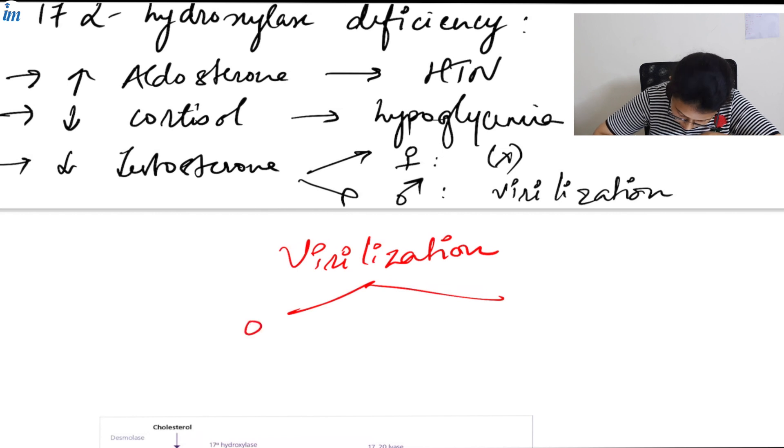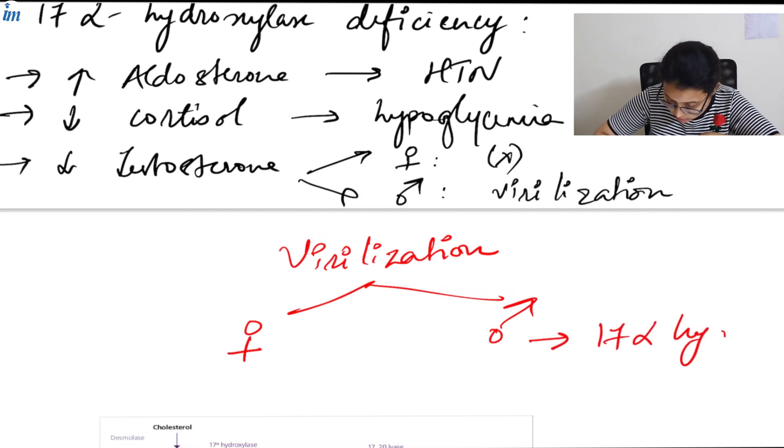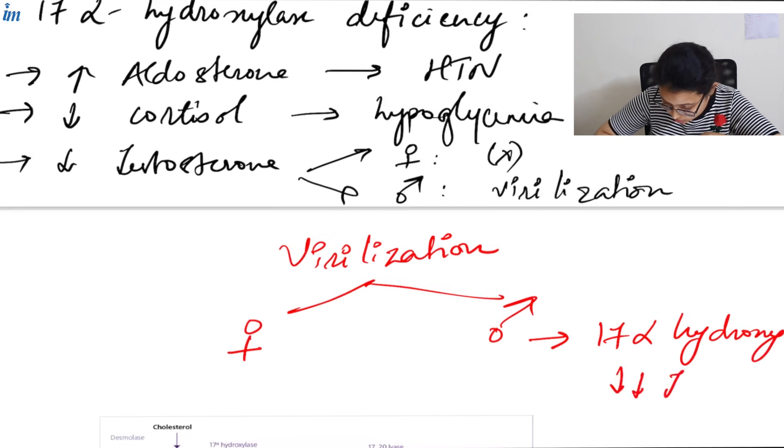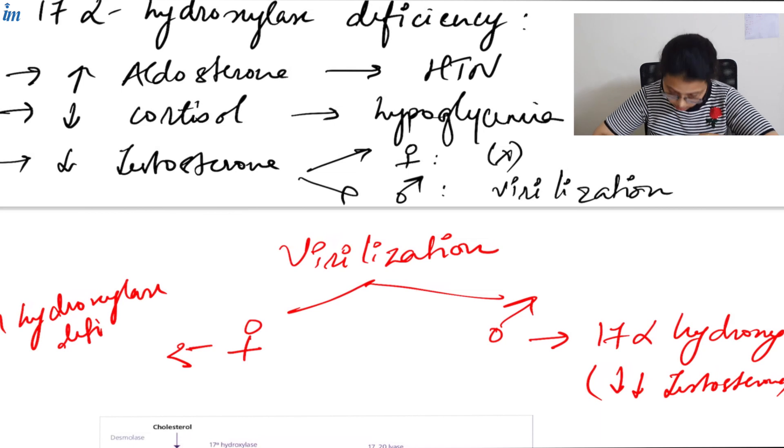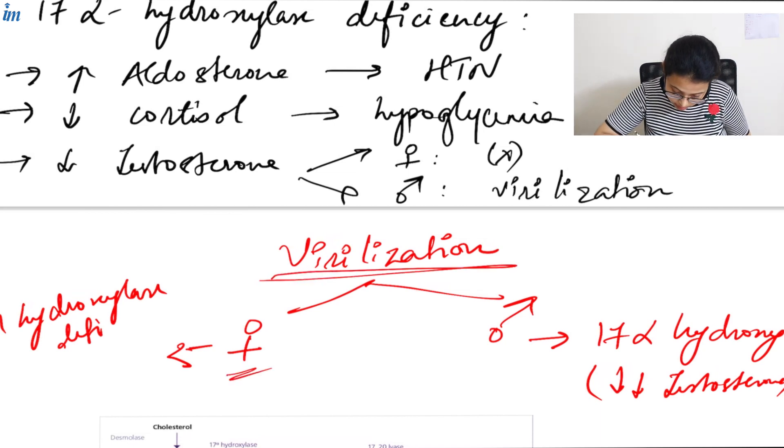We saw virilization in two enzyme deficiencies in both male and female. In males, we see this in 17-alpha-hydroxylase deficiency due to low levels of testosterone. In females, it is seen in 21-hydroxylase deficiency. So virilization is seen in both male and female, but the enzyme deficiencies are different. Remember this.